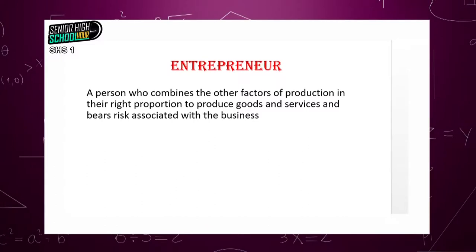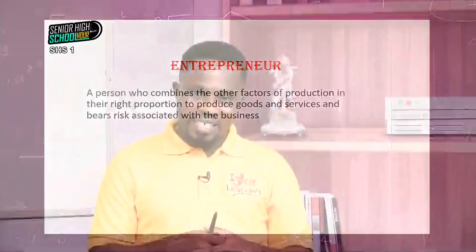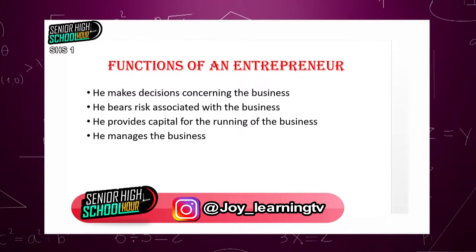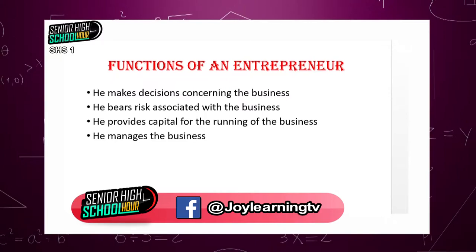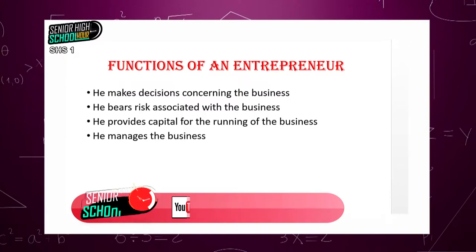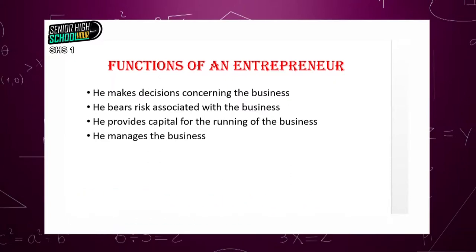Let's move on to entrepreneur. I told you that all these factors of production are managed by a particular person known as the entrepreneur. An entrepreneur is somebody who combines the factors of production in their right proportion to produce goods and services, and in addition bears the risk associated with the business. Functions of the entrepreneur: he makes decisions concerning the business, he bears risk associated with the business, he is the one who provides capital for the running of the business, and he manages the business. So the entrepreneur is the manager or, to a large extent, the owner of the business.